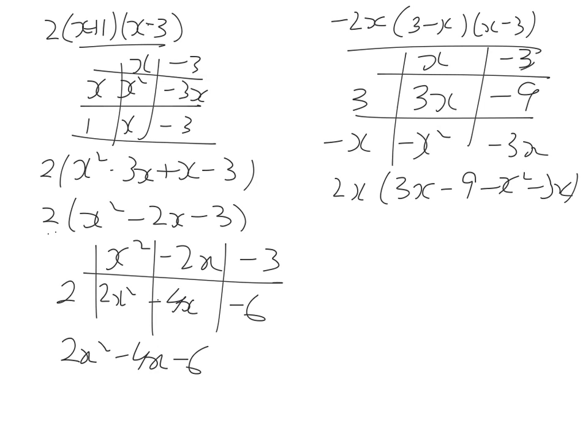Now, these will cancel. So we've got a plus 3x and a minus 3x. And we are left with 2x times negative 9 minus x squared. So 2x times negative 9 gives us negative 18x, and 2x times negative x squared will give us negative 2x cubed. Now, with convention, we put our x cubed first minus 18x.